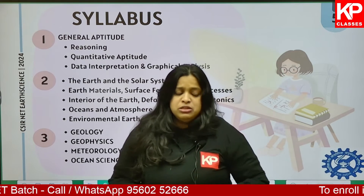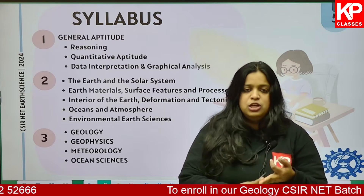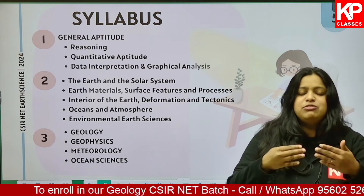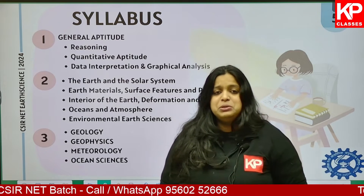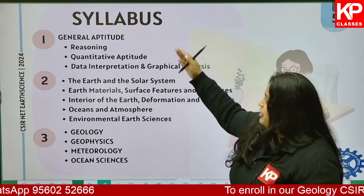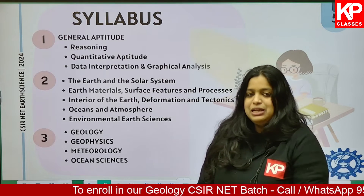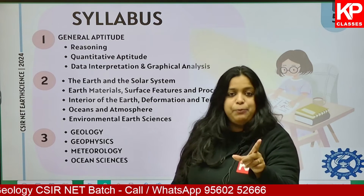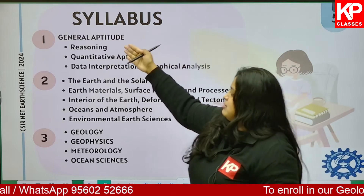Moving on to the syllabus — the NET CSIR exam is a combination of four to five different subjects: geology, geophysics, oceanography, meteorology, planetary science, etc. It's not possible to complete all five subjects in the next three to four months before the June examination. So we'll be doing smart work — dividing the syllabus strategically to complete enough topics to score more than 120 out of 200.